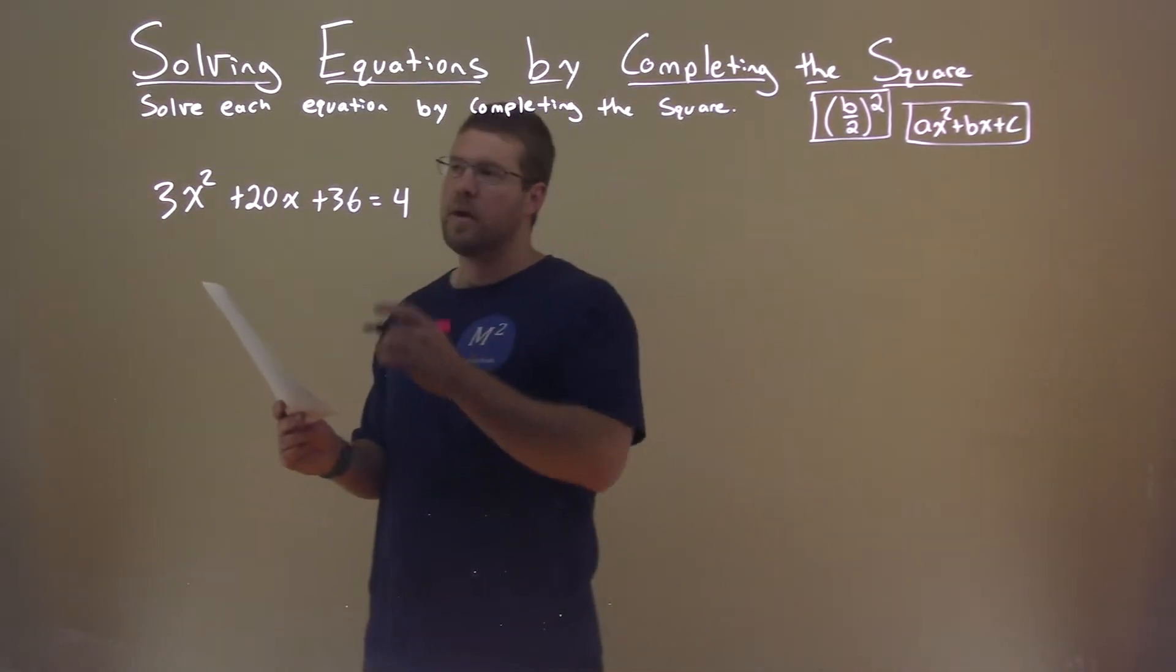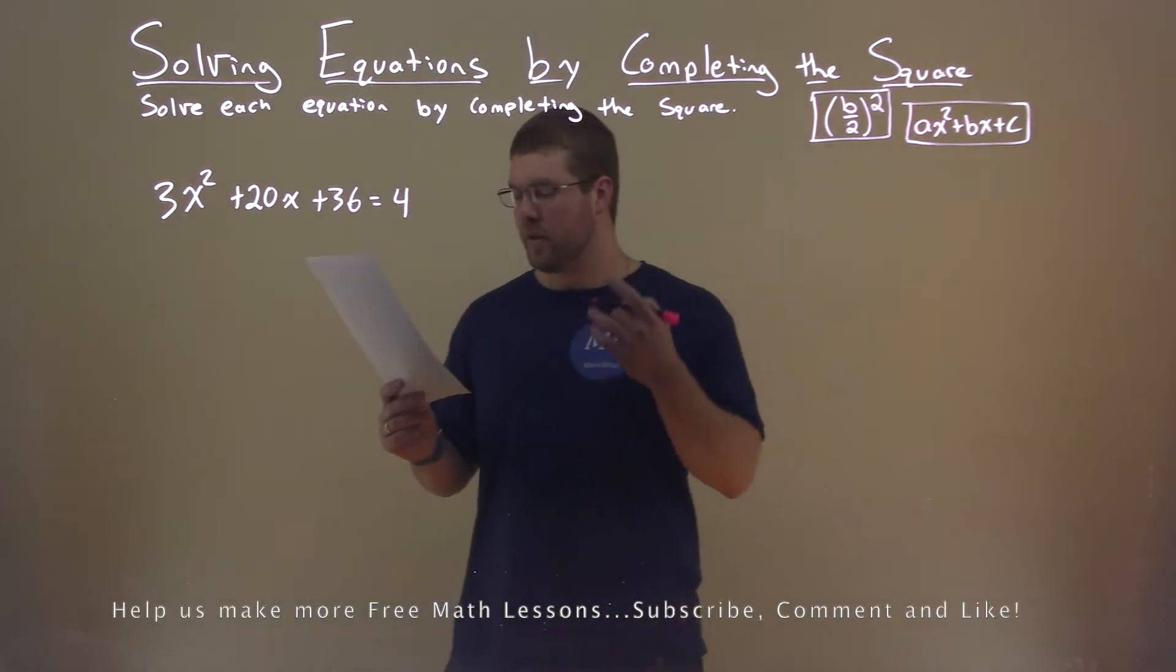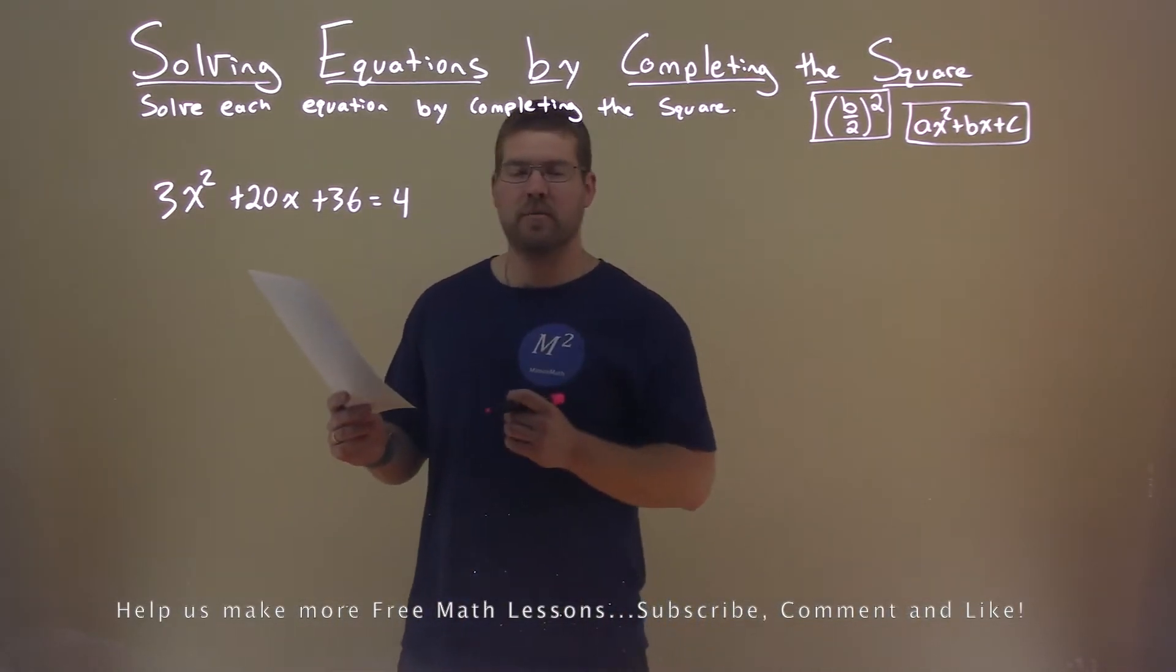We're given this problem right here, 3x squared plus 20x plus 36 equals 4. We want to solve this by completing the square.